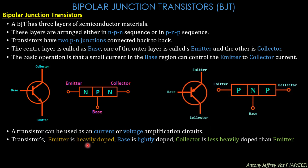The transistor emitter is heavily doped, the base is lightly doped, and the collector is less heavily doped than the emitter. Doping represents adding impurities into pure silicon material. The emitter region has the most impurities, the base region has very few impurities, and the collector has less than the emitter but more than the base.